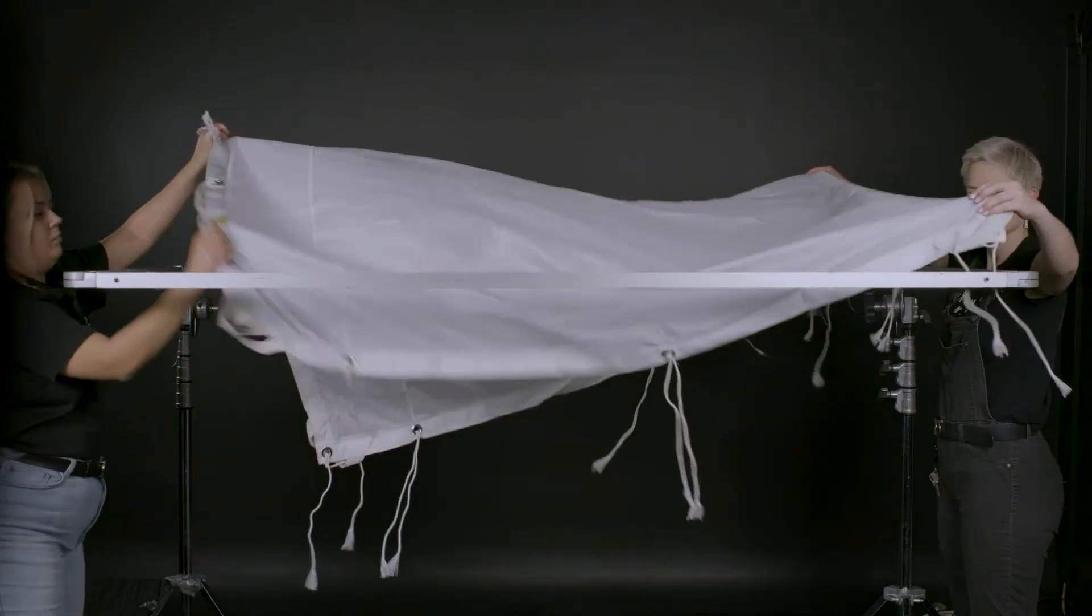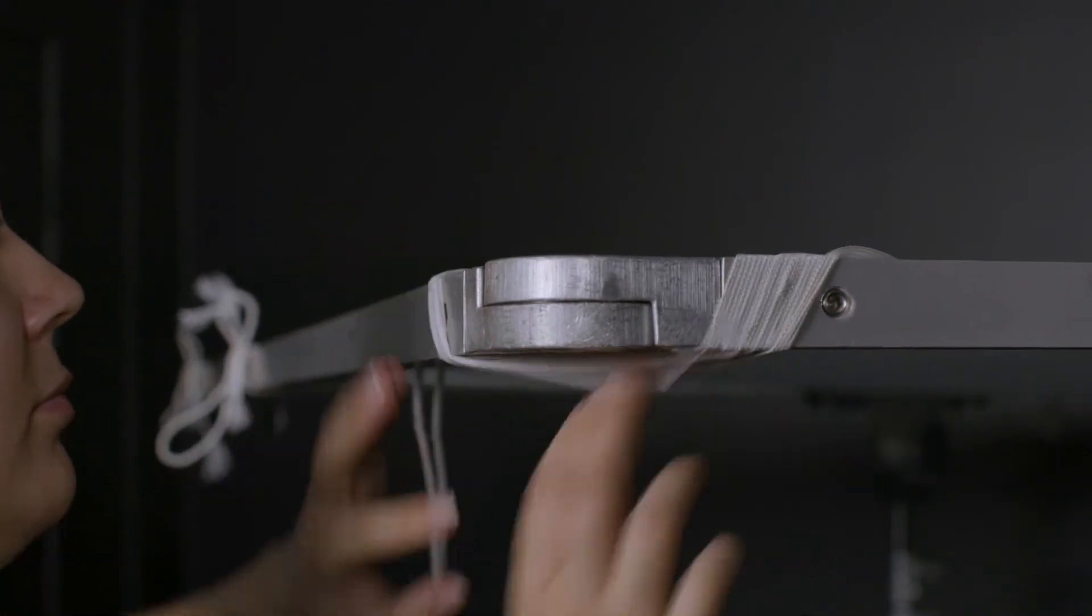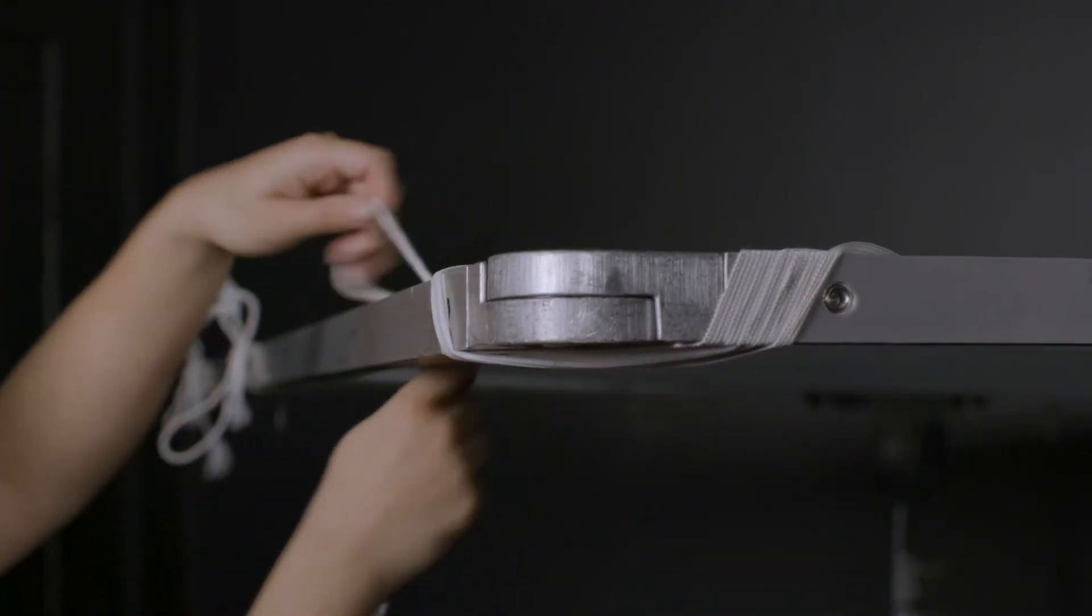To secure your diffusion onto the frame, you first need to loop each corner onto the frame and then tie the sides.